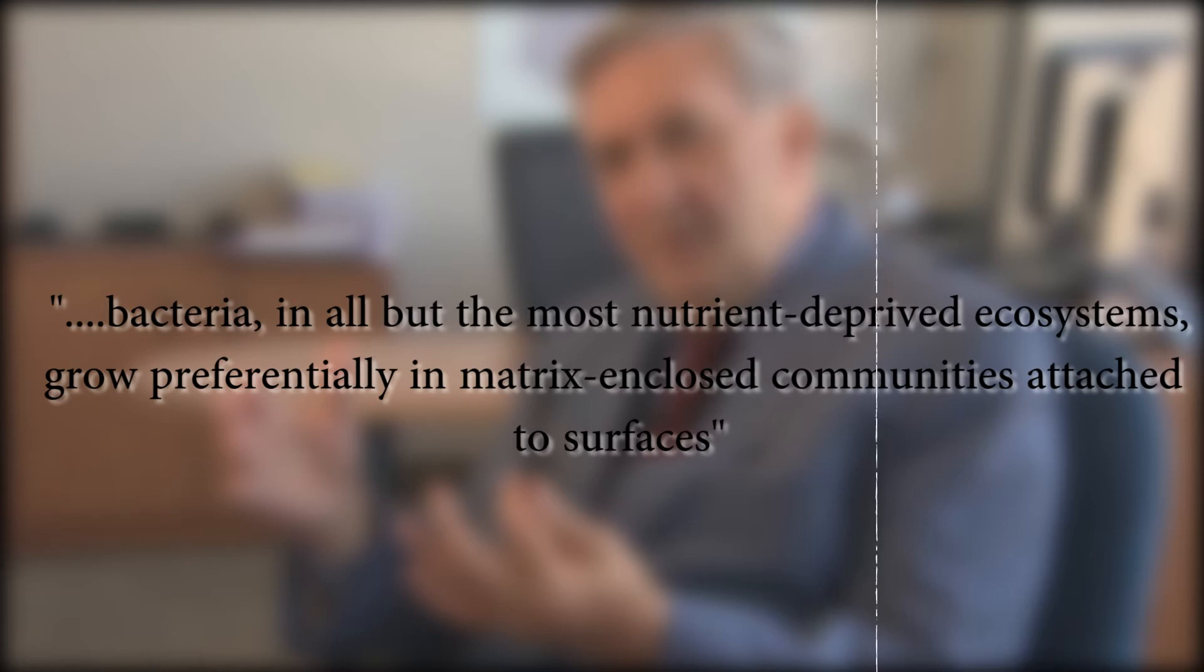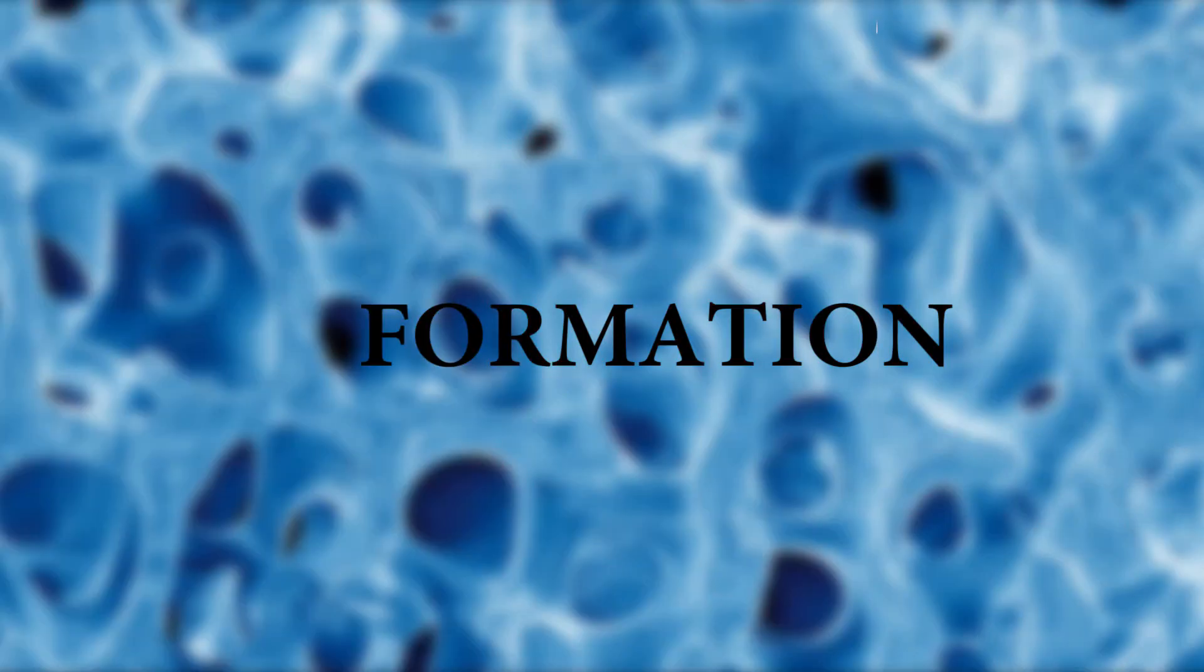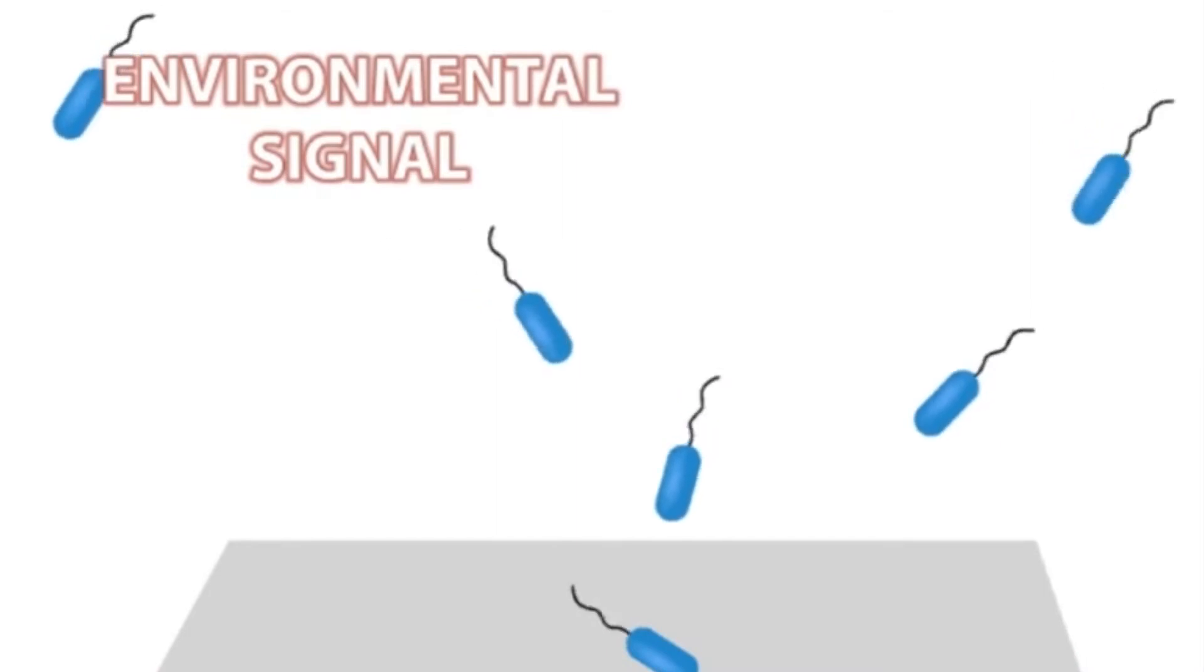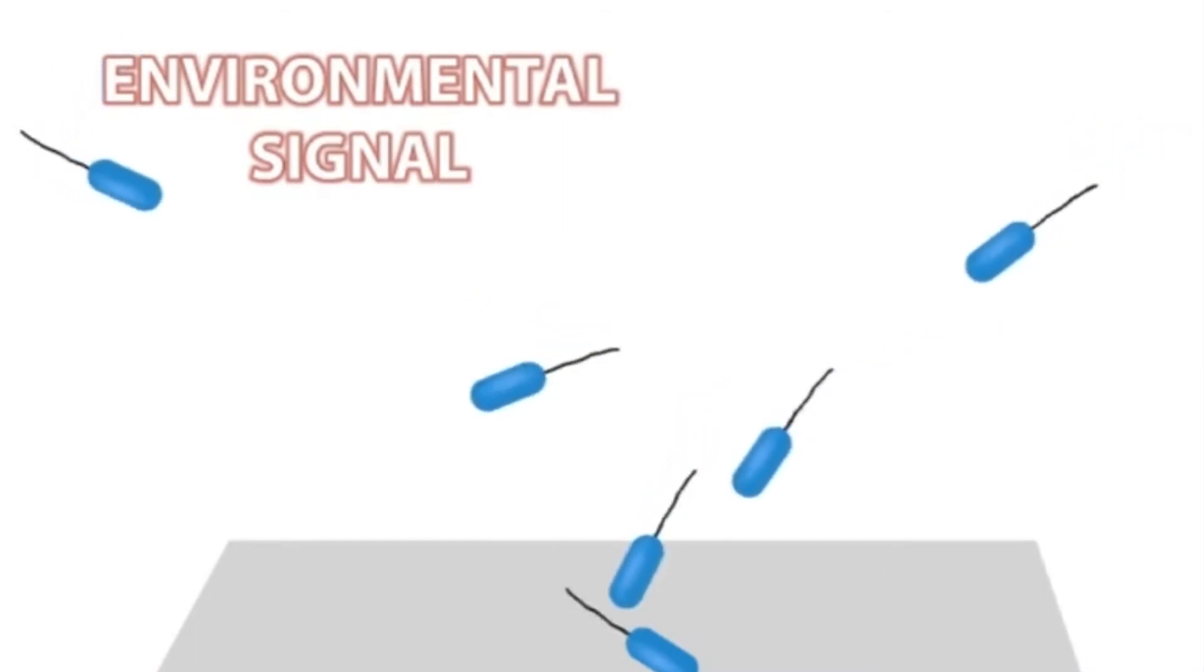The first stage of biofilm formation occurs when a specific environmental signal induces a genetic program in free-living planktonic cells. As the cells enter into the biofilm formation, they no longer maintain their flagella and instead may move along the surfaces using twitching motility.